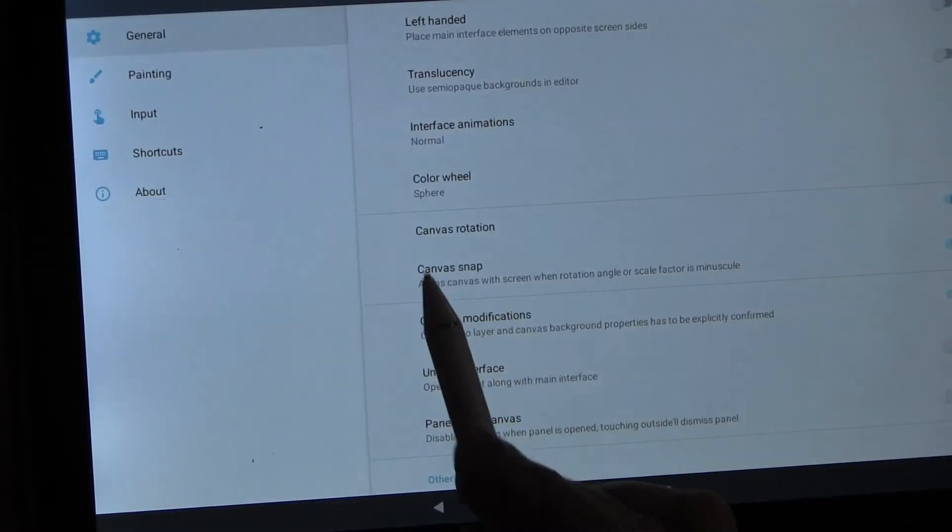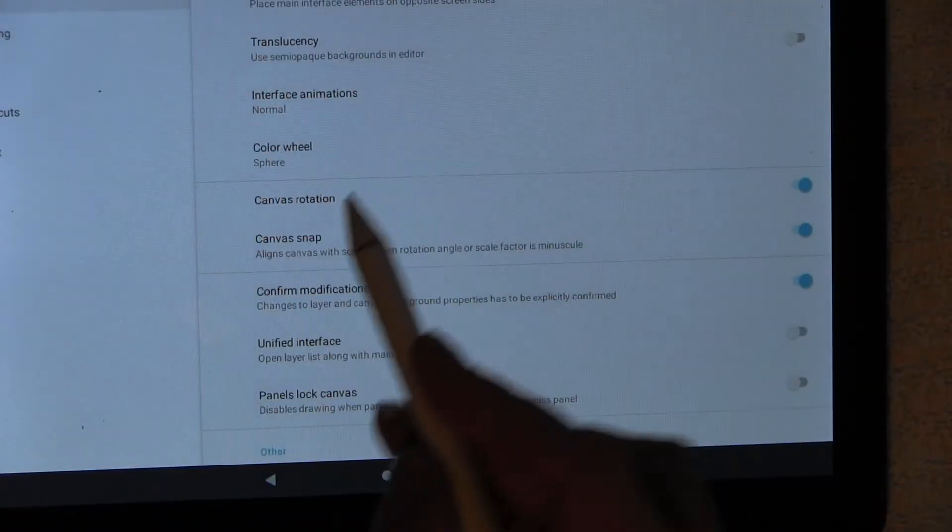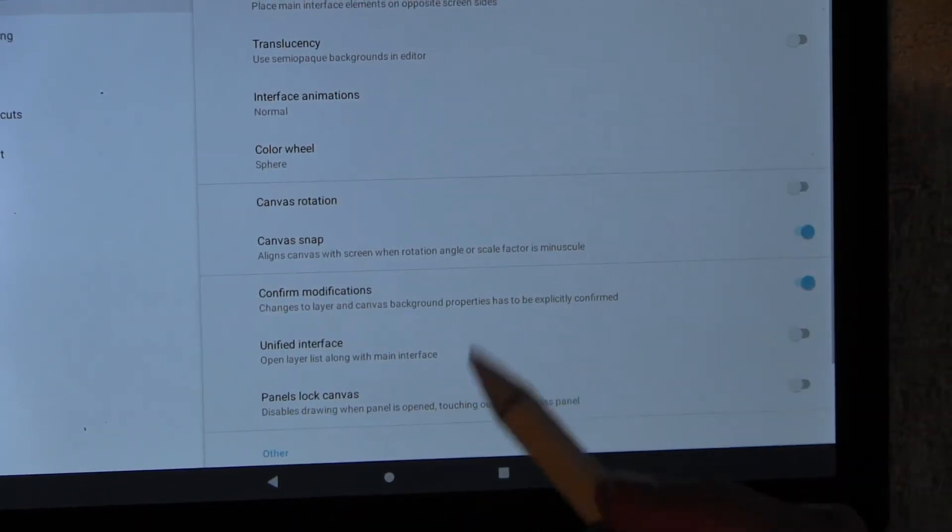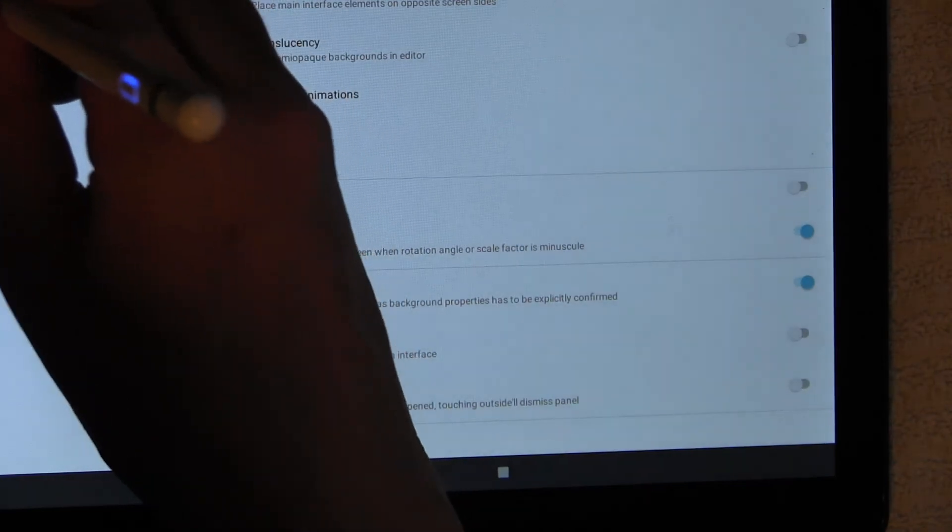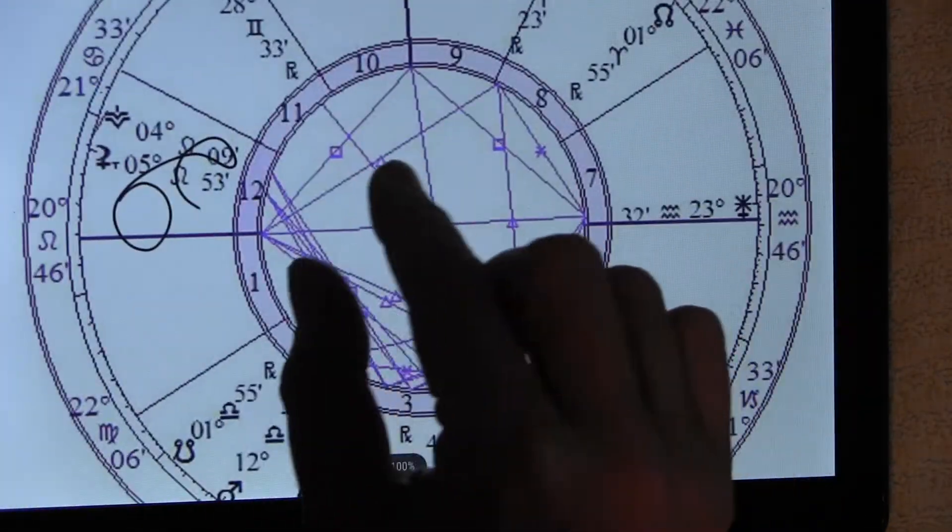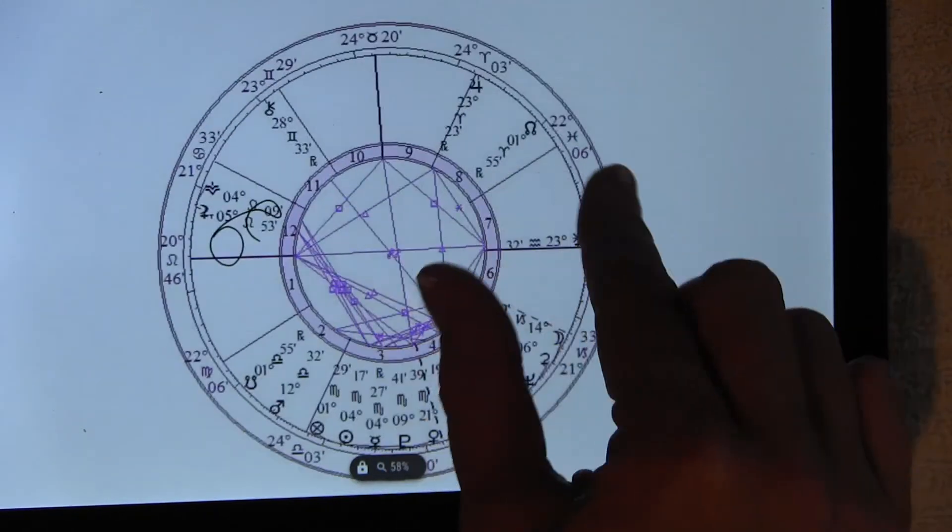And what that is is Canvas Rotation. And by default, Canvas Rotation is on, and then you just turn it off. And then it's saved. And then you go back out. And then when you zoom in and zoom out, it's not wobbling all over the place. It's nice and stable. Which for my purposes, that's what I need. I need it nice and stable so I can zoom in and zoom out.